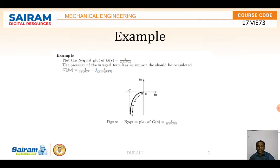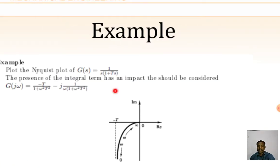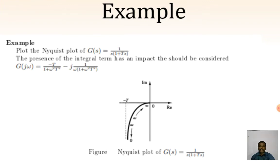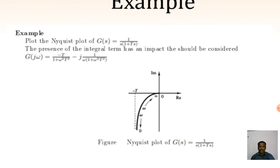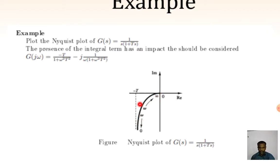Next, this is the example for the Nyquist plot. The problem they are providing: G(s) = 1/(s(1+Ts)). The presence of the integral term has an impact - this impact should be considered like G(jω) = -T/(1+ω²T²) - j/(ω(1+ω²T²)). If you see the drawing, the curve starts from 0 and ends at infinity. From the distance from here to here, you can take it as -T. The Nyquist plot G(s) = 1/(s(1+Ts)).